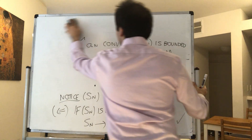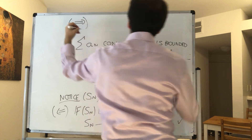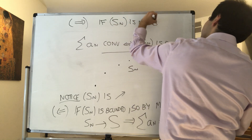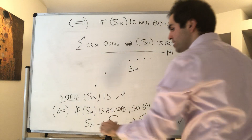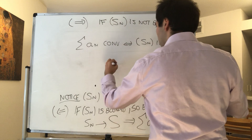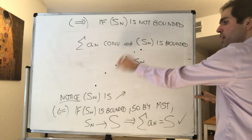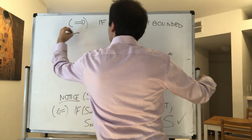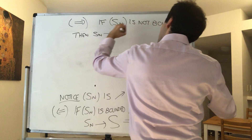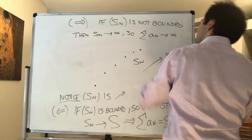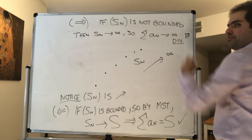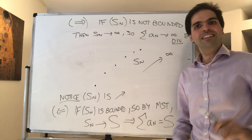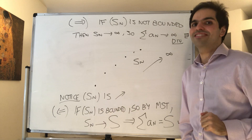And conversely, if S_N is not bounded, it keeps getting bigger and bigger. Then the only way that can happen is if S_N goes to infinity. So the series of a_N goes to infinity and therefore it diverges. And we're done. That's all good, but of course we would like to have some easier tests for convergence, and that's the point of the next series of videos — no pun intended. Thank you very much.